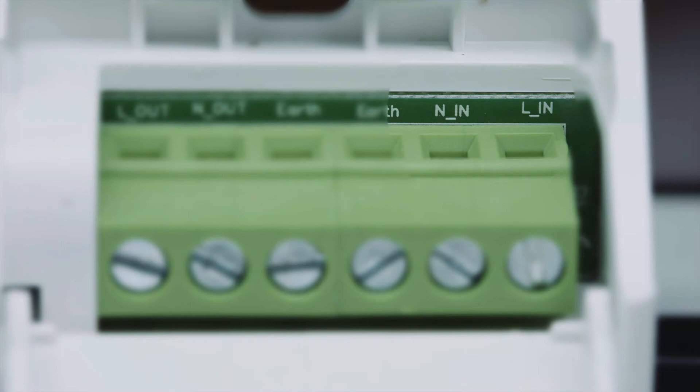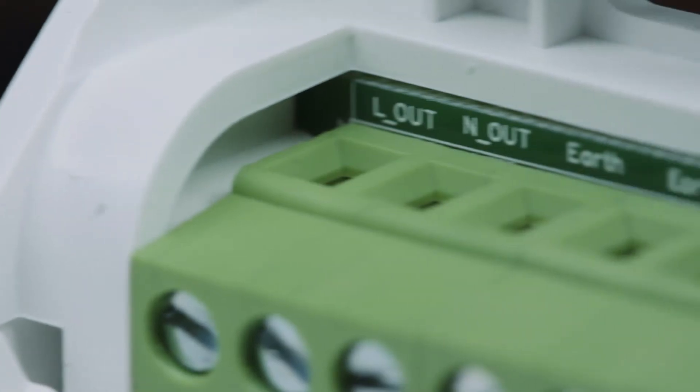Next, wire the first light fitting in the circuit to the terminals showing L-out and N-out.